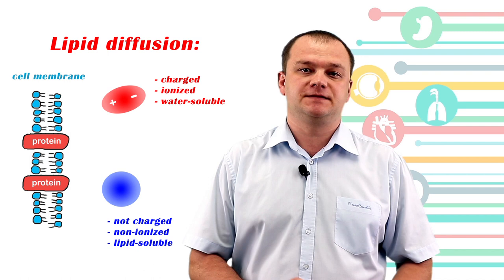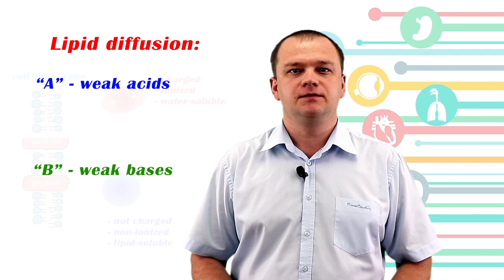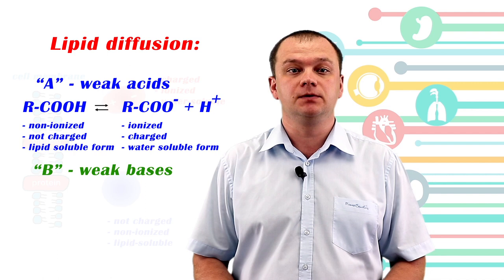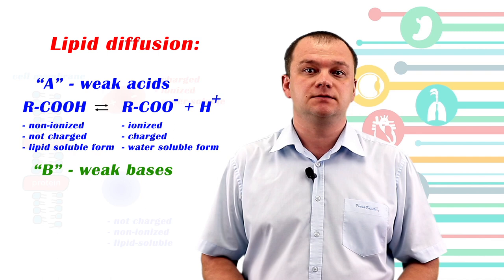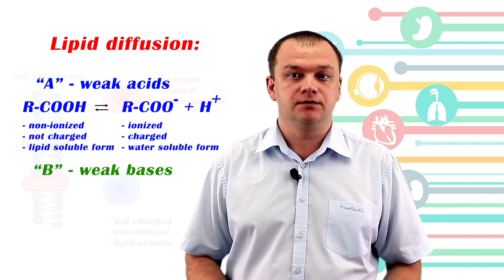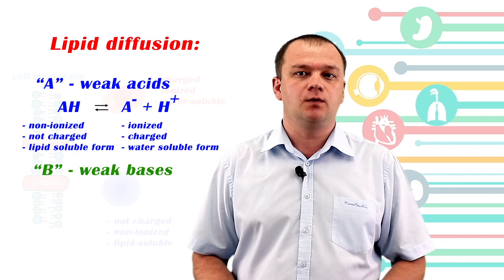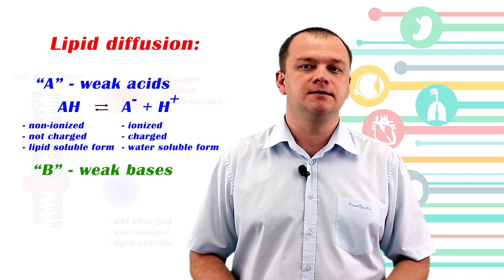Looking at acids and bases: 'A' for acids and 'B' for bases. The non-ionized or uncharged form of acids is lipid-soluble and better penetrates lipid membranes. The ionized or charged form of acid is water-soluble and better renally cleared. Weak acids become ionized or charged better in alkaline environment, and after dissociation, weak acids produce a negatively charged conjugate base and a hydrogen ion.